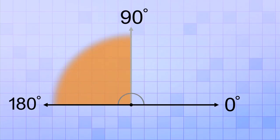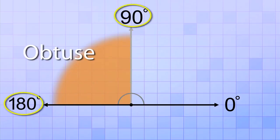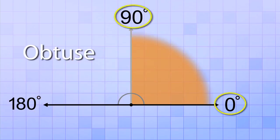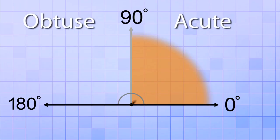In this region, between 90 and 180, we find obtuse angles. And in this region, between 0 and 90, we find acute angles. One important acute angle is 45 degrees since it's half of a right angle.